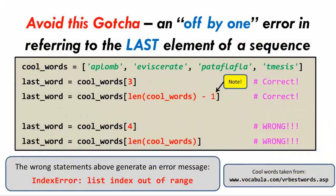The fact that the beginning index is zero leads to a potential gotcha when referring to the last element of the sequence. Let's look at an example.